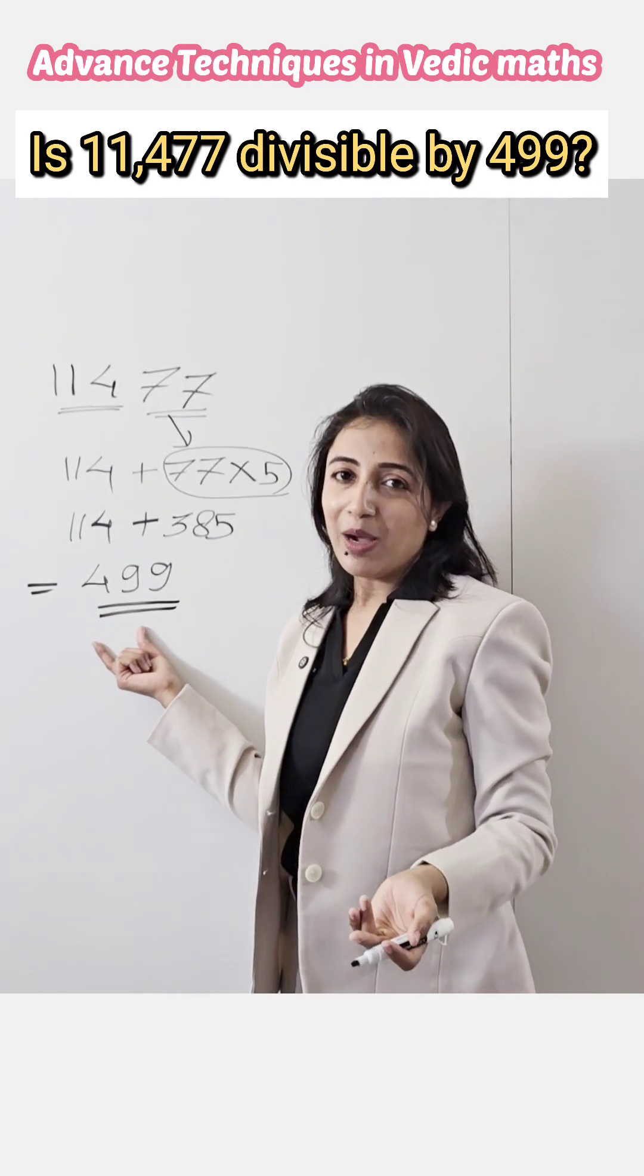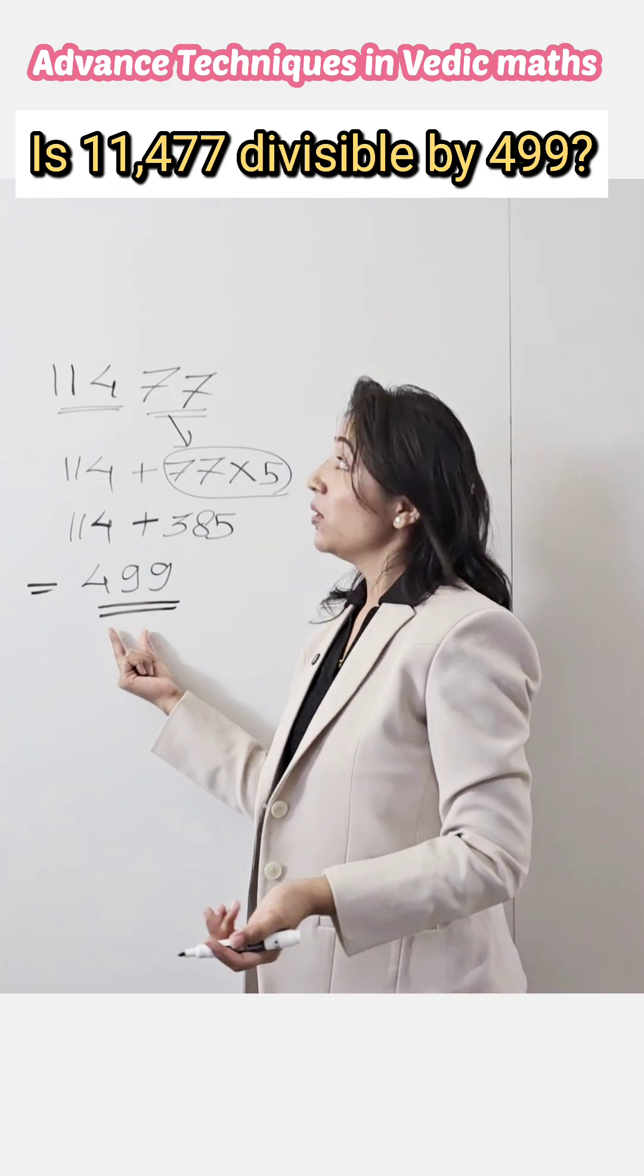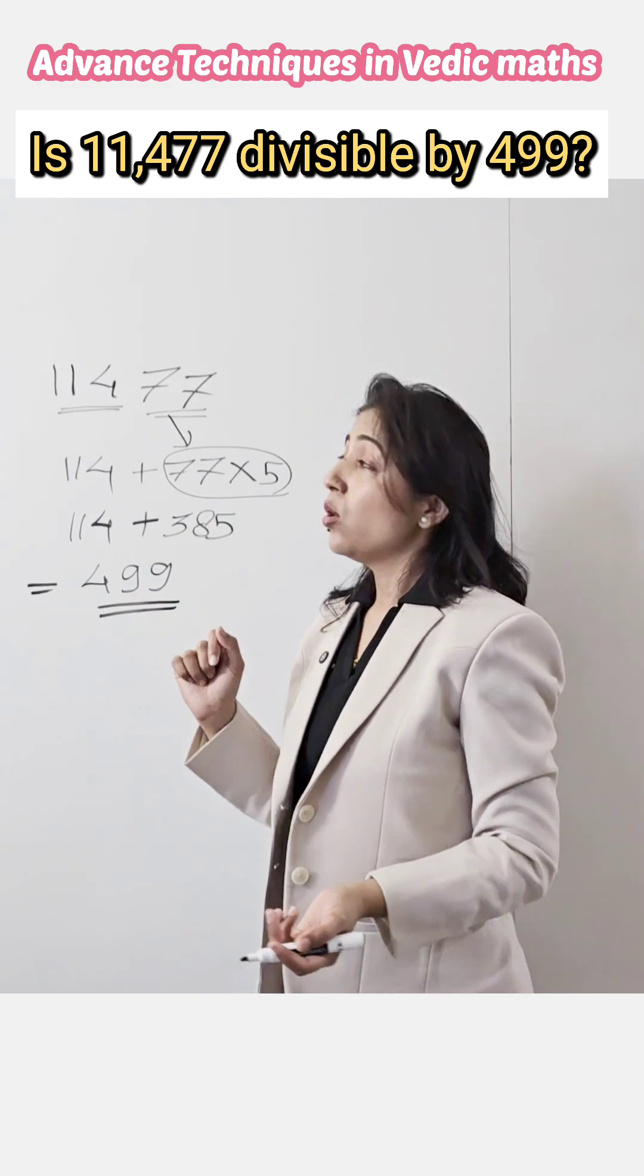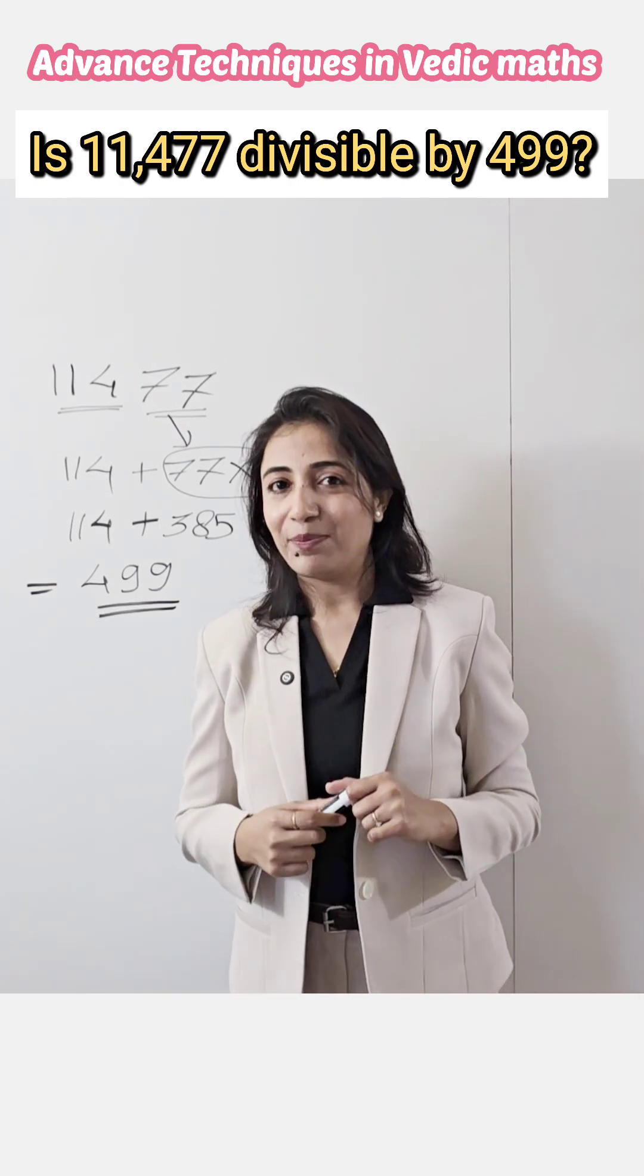This 499 is divisible by 499. So if our answer is divisible by 499, it means our original number 11,477 is also divisible by 499. Now, isn't it simple?